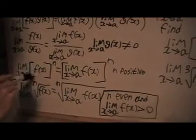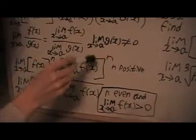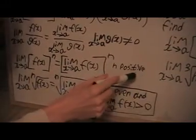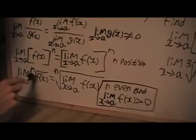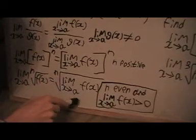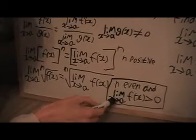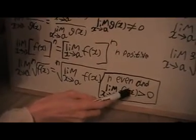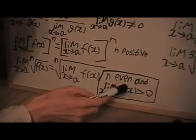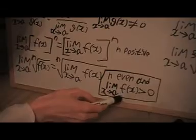And this one here, I've got this function raised to a power. That's the same as this limit raised to the power, and n has to be positive in this case. And it's the same for n-th roots. So I've got an n-th root and an n-th root here. Here's the rule, and n has to be even, and the limit of f of x has got to be bigger than zero, because otherwise it's a complex number.